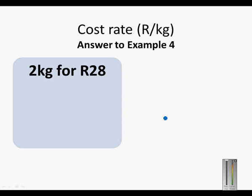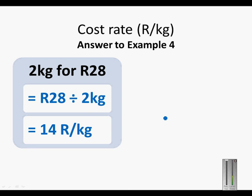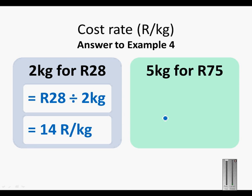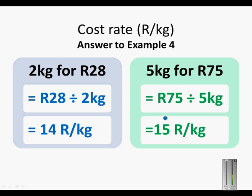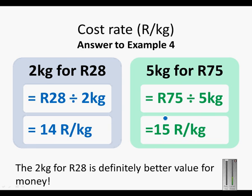The 2 kilogram box for 28 Rand: cost rate is 28 Rand divided by 2 kilograms, which is 14 Rand per kilogram. The 5 kilogram container for 75 Rand: rate is 75 Rand divided by 5 kilograms, which is 15 Rand per kilogram. So the 2 kilogram box for 28 Rand is definitely better value for money, because the cost rate is 14 Rand per kilogram — 1 Rand per kilogram cheaper than the larger container.